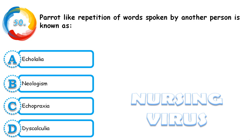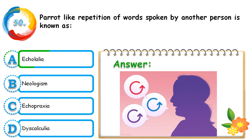Question 50: The parrot-like repetition of words spoken by another person is known as echolalia, neologism, echopraxia, or dyscalculia. The correct answer is echolalia. Just like a trained parrot repeats whatever is said to it, in echolalia the patient repeats back the same words spoken to them.